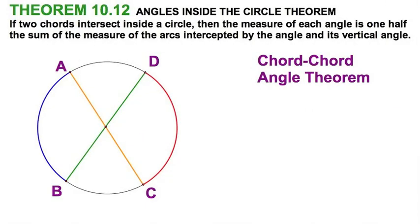Next theorem. Your textbook calls it angles inside the circle theorem. Let's stick with the old school, we'll call it the chord chord angle theorem. After all, you've got a green chord and an orange chord chopping up this circle and splitting it into these four different arcs.